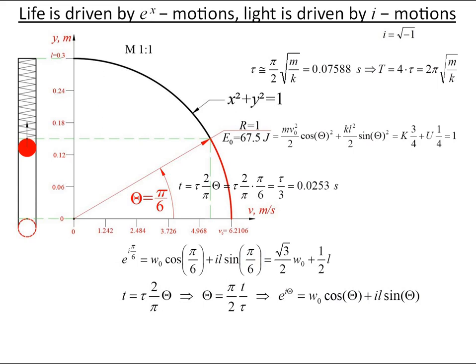We see that at time moment t, three-fourths of total energy is in kinetic energy and rest of one-fourth of energy is potential spring energy.